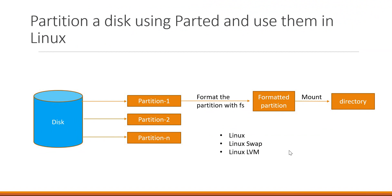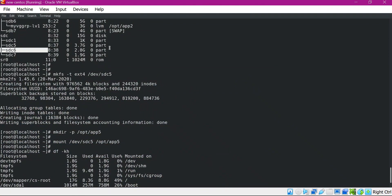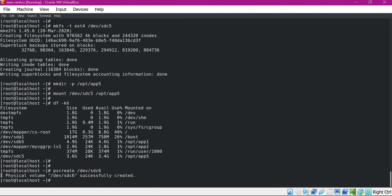Now let us work on the LVM partition. Using the LVM partition, we first create a physical volume using pvcreate on SDC6. A physical volume is successfully created. Using this physical volume, we create a volume group using vgcreate, providing a name and specifying the corresponding physical volume. The volume group is created. Now let us create a logical volume from this group using lvcreate, specifying a size of 100 MB, a name, and the volume group.